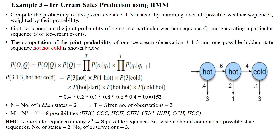We have to compute the probability based on the ice creams eaten by Jason: on day 1, three ice creams; on day 2, one ice cream; on day 3, three ice creams. So three days of ice cream consumption by Jason is given. Based upon these observations, we have to compute the probability of the weather sequence — the sequence of weather on these three days — which generated the observations: 3, 1, 3 ice creams consumed by Jason.